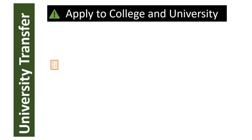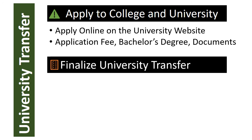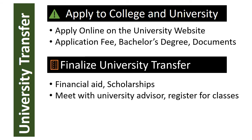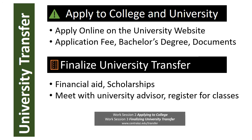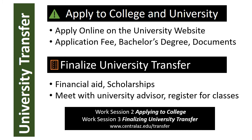Applying to colleges and universities is not difficult if you have researched admission requirements and application processes. Applications will be completed online through the university website. You will need to supply requested documents, declare a bachelor's degree, and pay the online application fee. After being accepted into the university and degree program of your choice, financial aid, scholarships, and other details will need to be finalized, along with meeting the university advisor and registering for university classes. It is highly recommended that you view online or attend in person the CAC Transfer Center Work Session 2: Applying to College, and Work Session 3: Finalizing University Transfer. Find information at www.centralaz.edu/transfer.